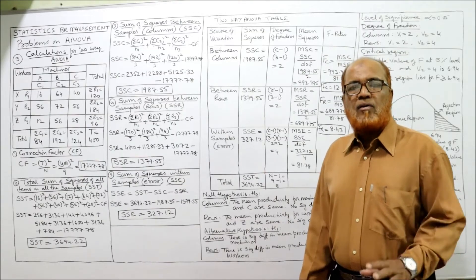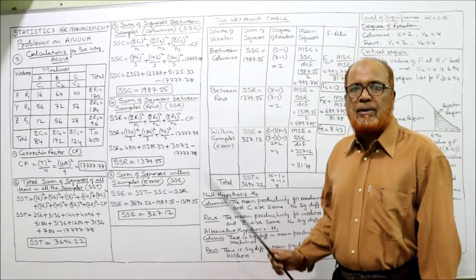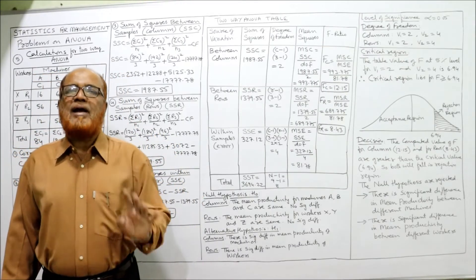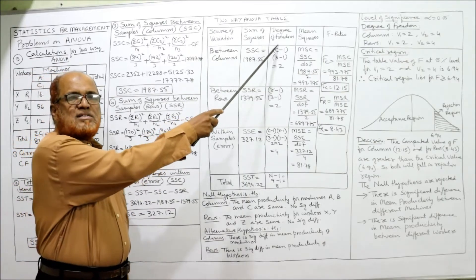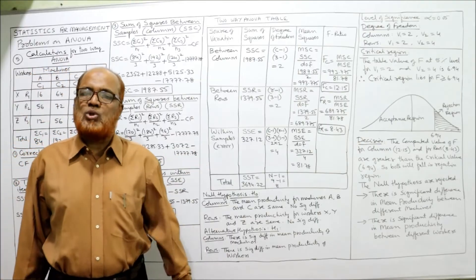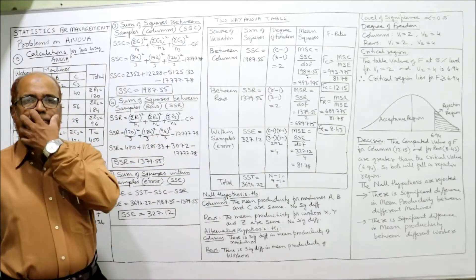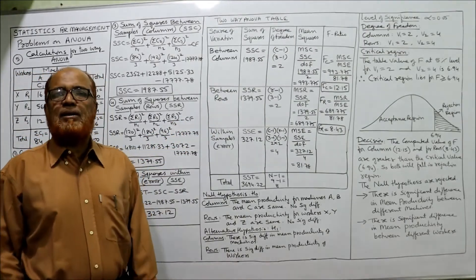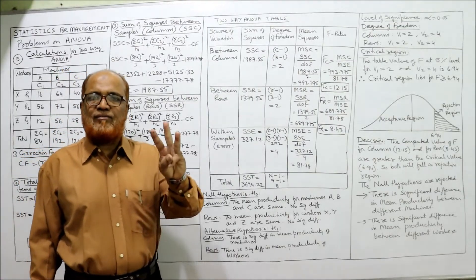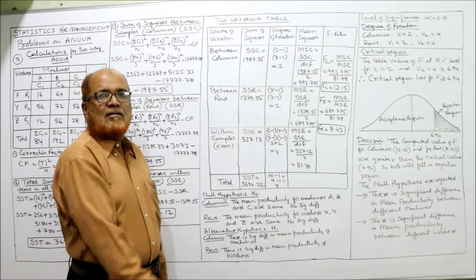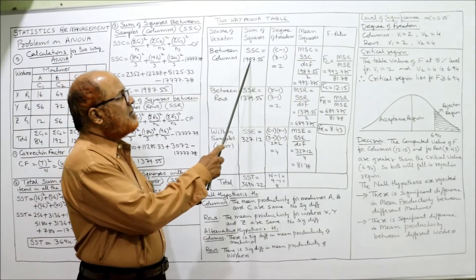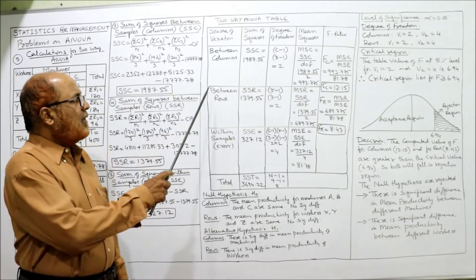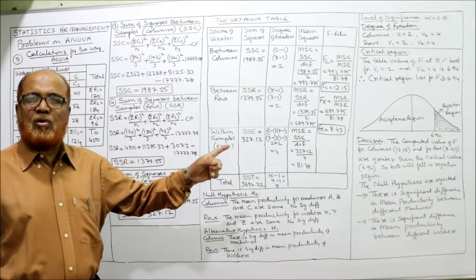Now we prepare the two-way ANOVA table — similar to one-way but with one extra row. The table has columns: Source of Variation, Sum of Squares, Degree of Freedom, Mean Squares, F Ratio. First row — between columns (machines): SSC = 1,987.55, df = C − 1 = 3 − 1 = 2, MSC = 1,987.55 / 2 = 993.775.